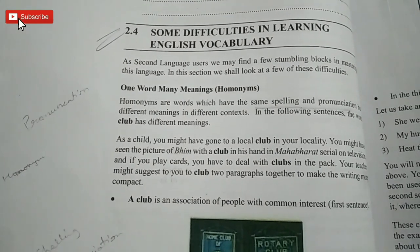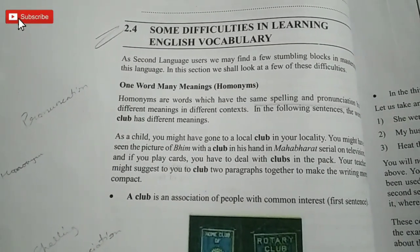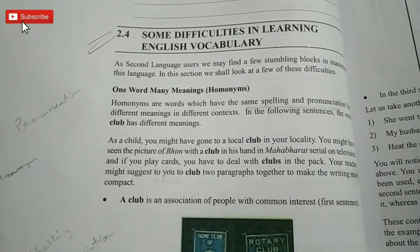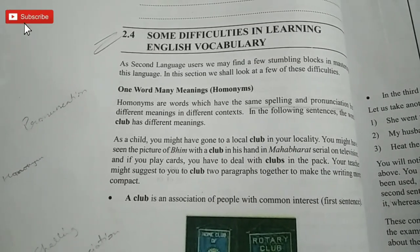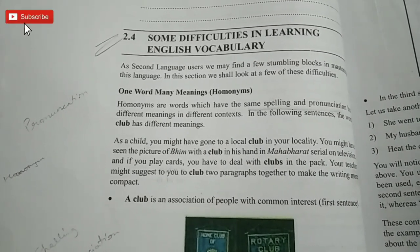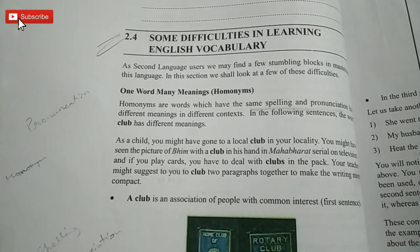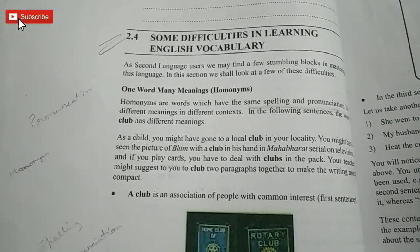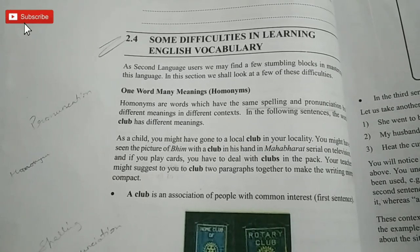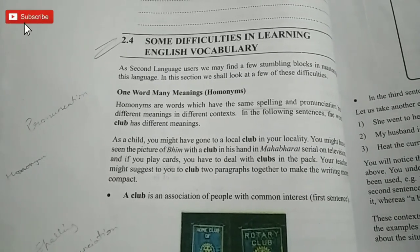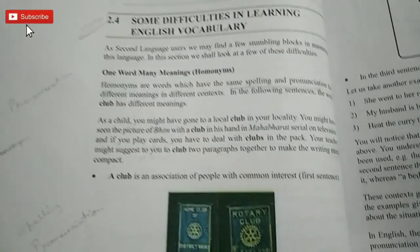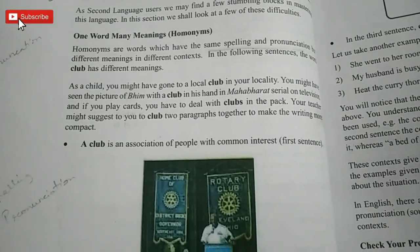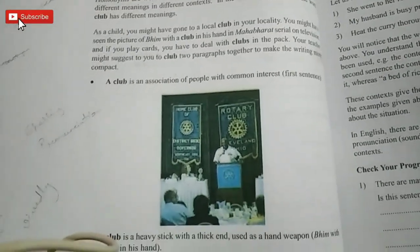Now we come to section 2.4: some difficulties in learning English vocabulary. Let's understand how we get difficulty in learning English vocabulary. The first is homonyms. Homonyms means there is the same spelling and pronunciation but the meaning is different. For example, the word 'club.'